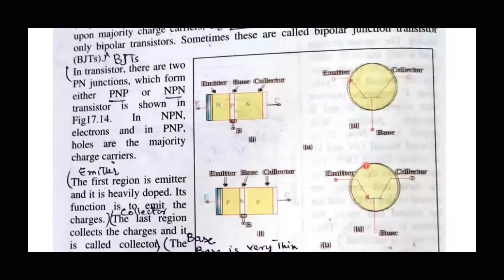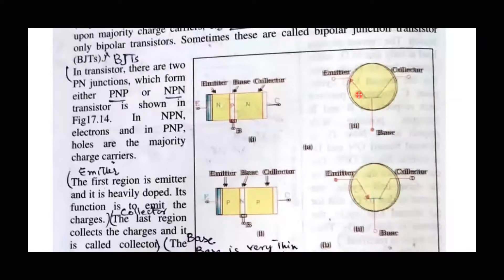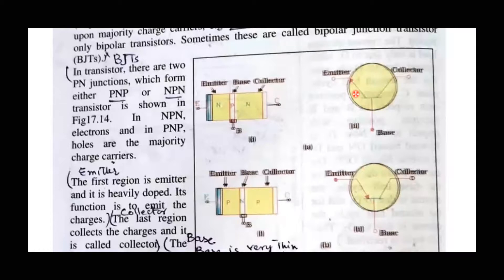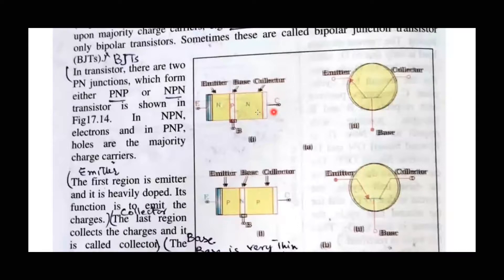In both types, there are two types of charge carriers: electrons and holes. However, electrons are the preferable carriers, so in practice we commonly use the NPN transistor. This is the simple construction and junction explanation of the transistor.